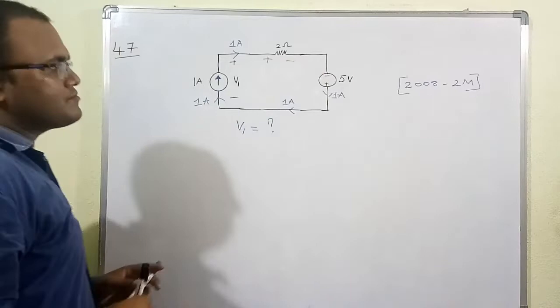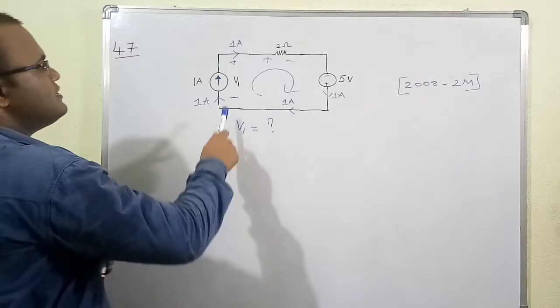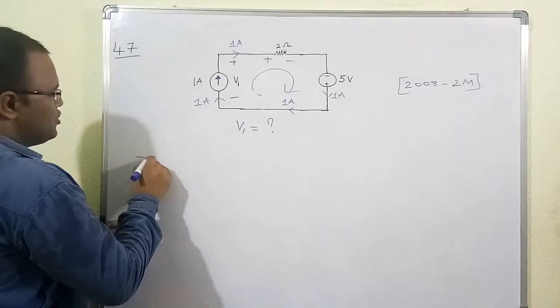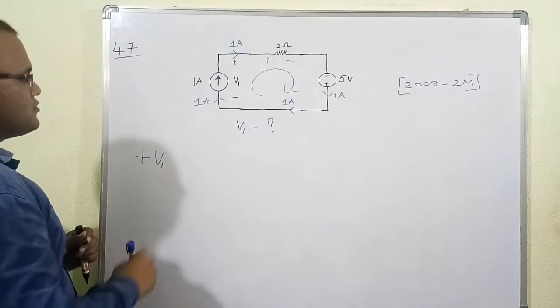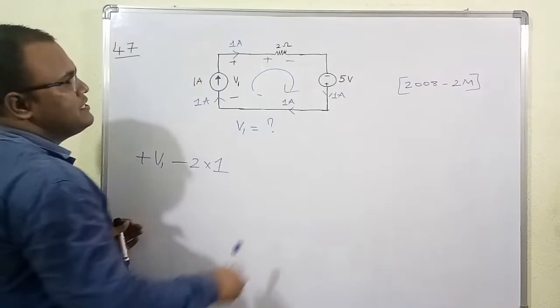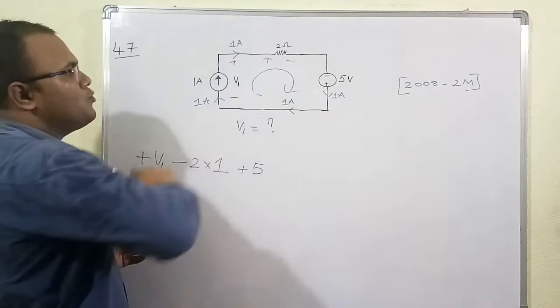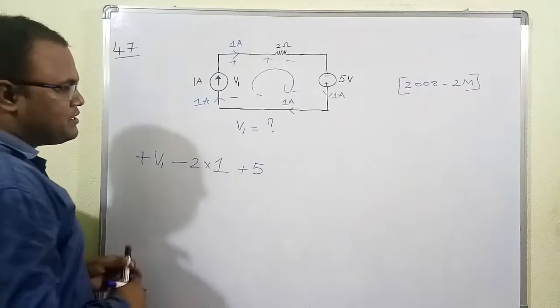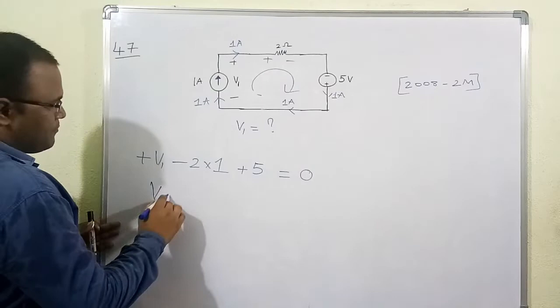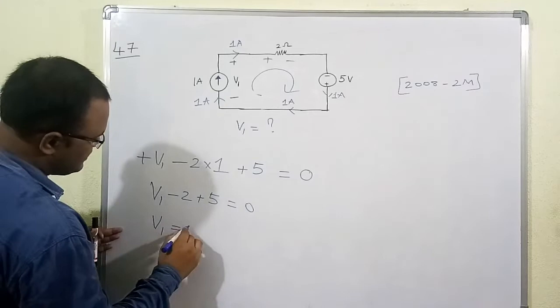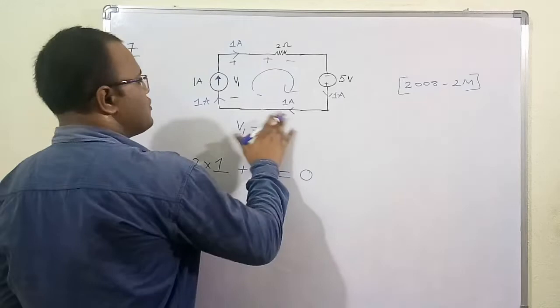Writing KVL in the loop: going from negative to positive through V1 gives plus V1; then from positive to negative through the 2-ohm resistor gives minus 2 times 1; then from negative to positive through the 5-volt source gives plus 5; the loop equals zero. So V1 minus 2 plus 5 equals 0, therefore V1 equals minus 3 volt. This is the required solution. The current source always maintains 1 ampere; the voltage can be anything depending on the circuit.